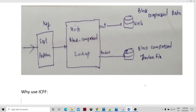Why ICFF? Because whenever the data grows up to the length of hundreds of gigabytes or probably terabytes, it's not feasible to store the lookup data into normal lookups and dynamic lookups, and pull those hundreds of gigs while running the component and doing the lookup operation. So it's some overhead. To overcome this overhead, we use ICFF, because the volume is high.